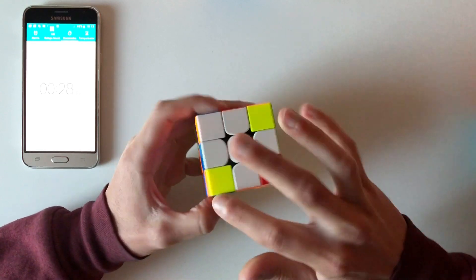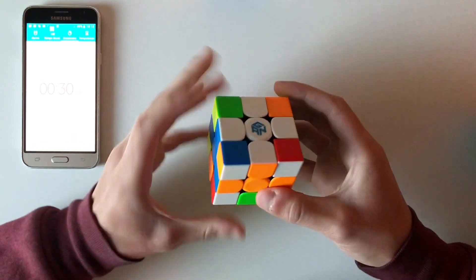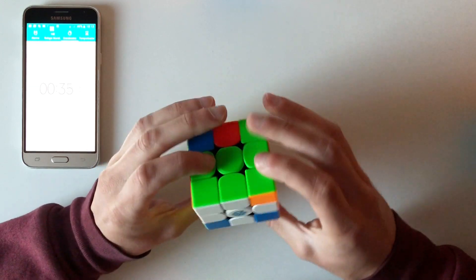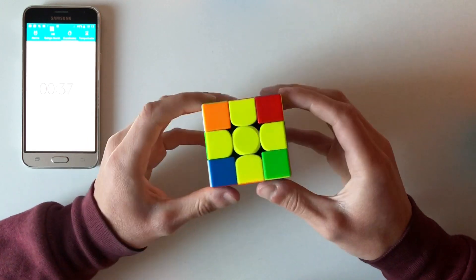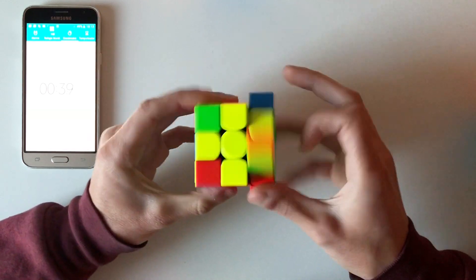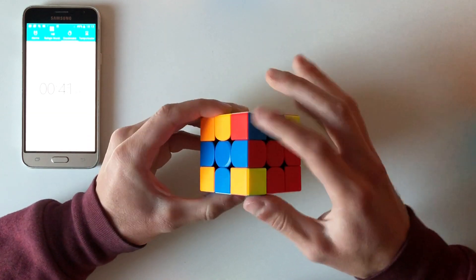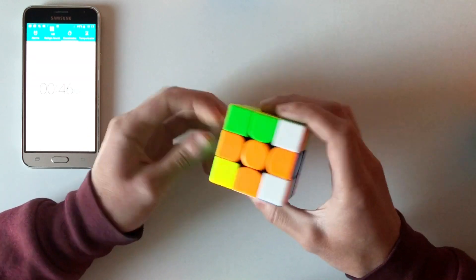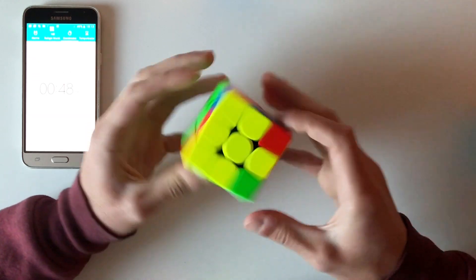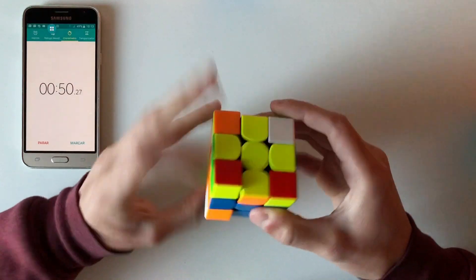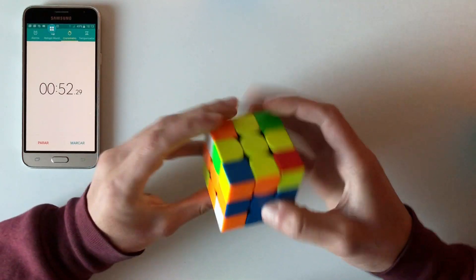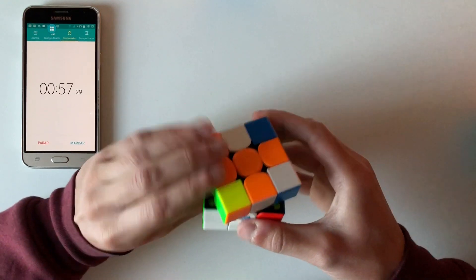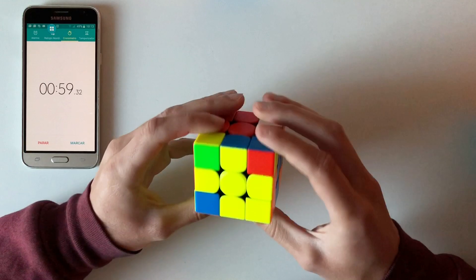Now corners. This one needs to go here, and this one needs to go there. This one in place keeps in place. These two are missing. Let's bring it here and then bring it down like this. Now this one needs to go here, that's two times the algorithm. Now bring it down. Bring it down like this. Now the upper layer.